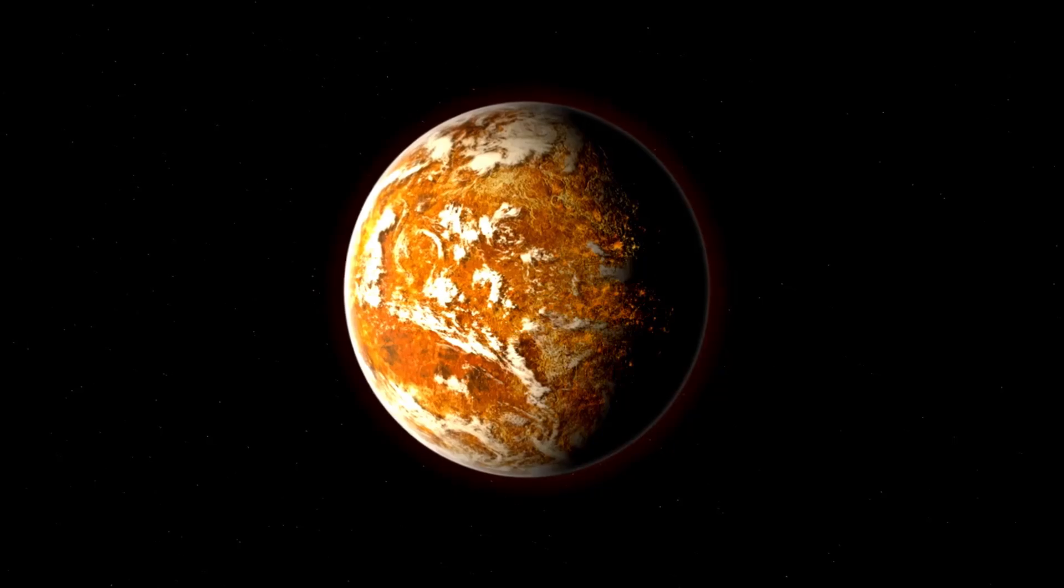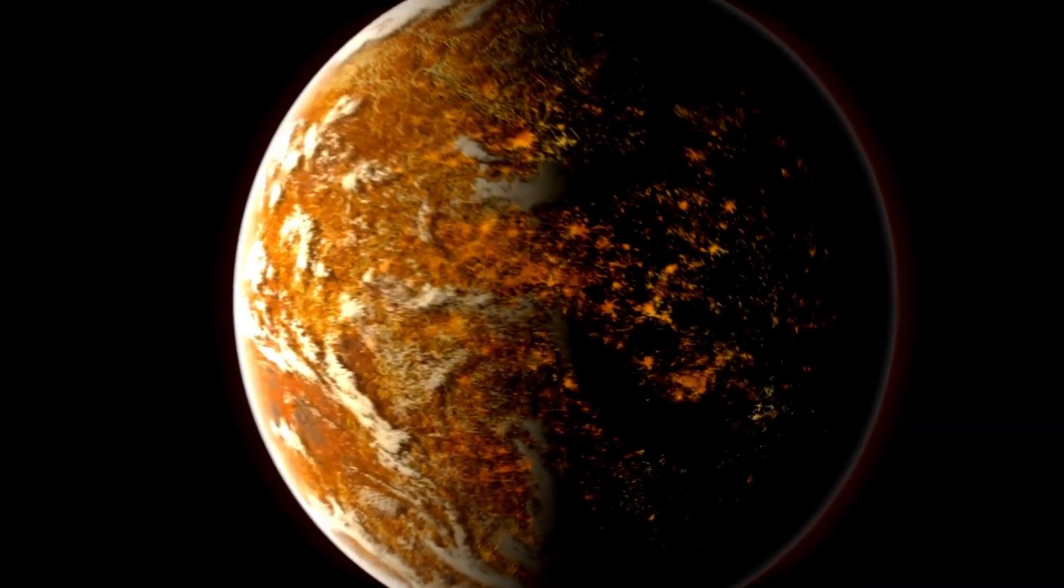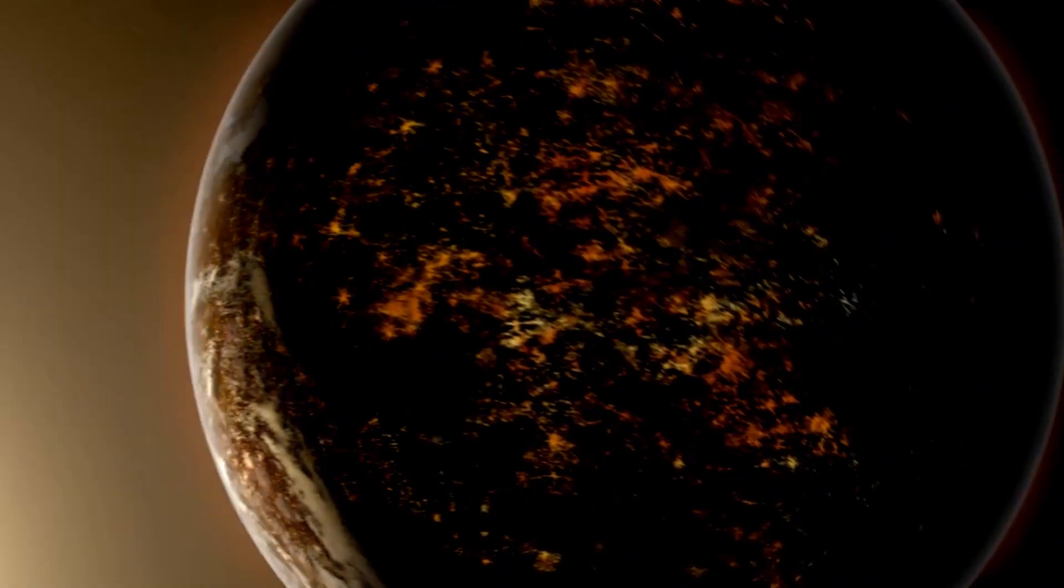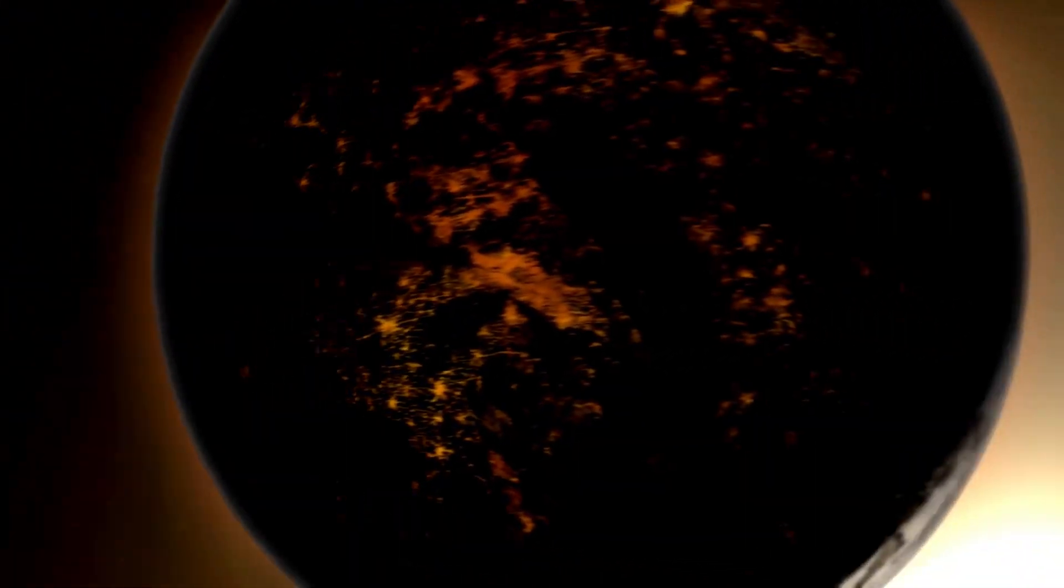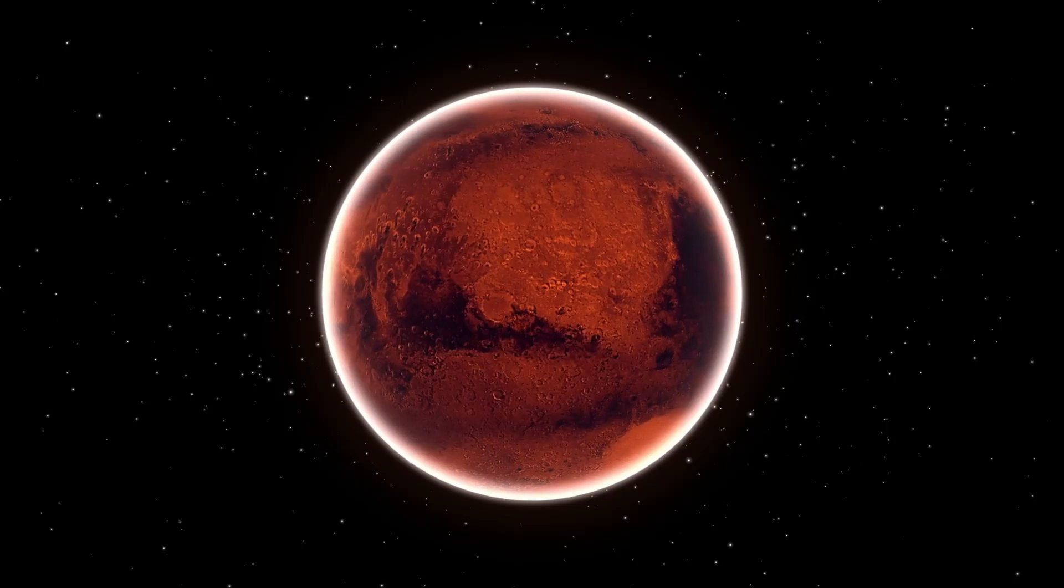While observing the closest star system to us, Proxima Centauri, which is only four light-years away, scientists have seen a couple of specific anomalies from one of the planets in the system, Proxima B.